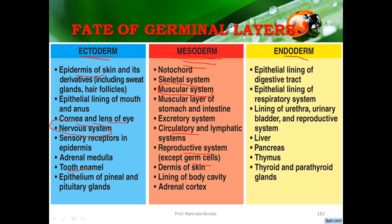The third one is the endoderm. The endoderm develops into the epithelium of the midgut, glands of the stomach and intestine, tongue, tonsils, lungs, trachea, bronchi, larynx, urinary bladder, vagina, liver, pancreas, thyroid gland, parathyroid gland, thymus gland, Eustachian tube, epithelium of the urethra, and the lining of the middle ear. All these organs are originated from the endoderm.